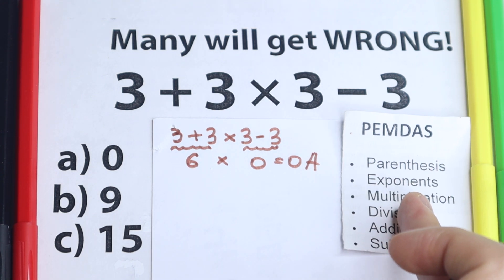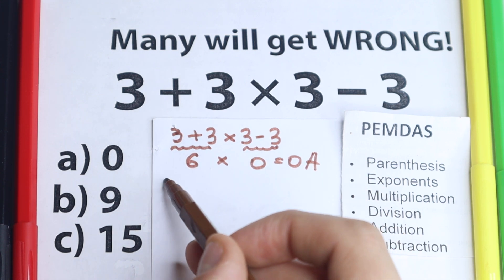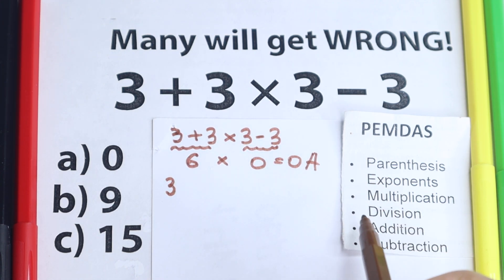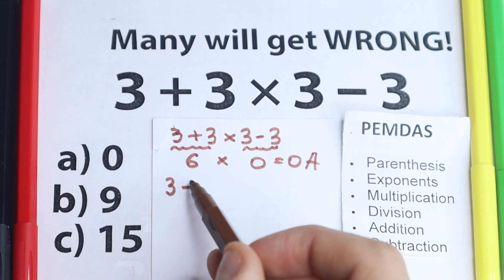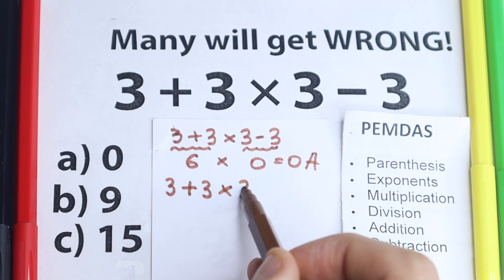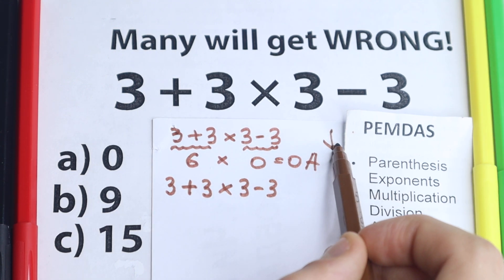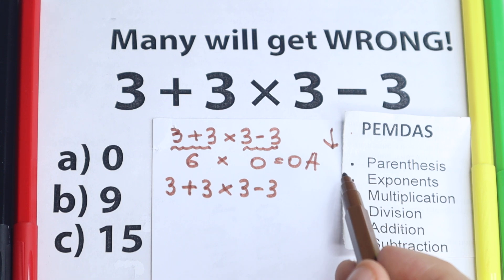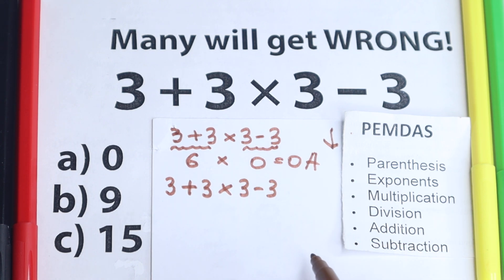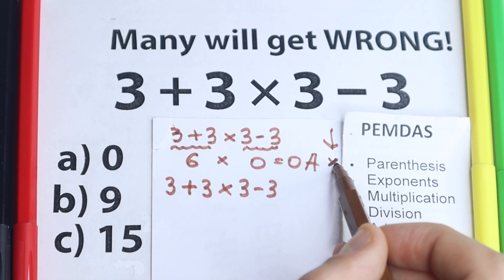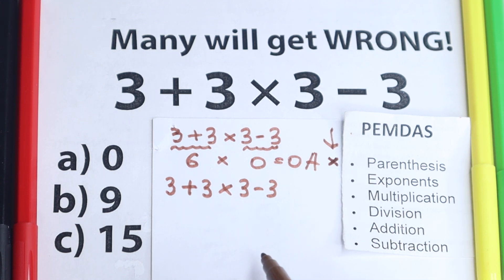Let's write this question once more. 3 plus 3 times 3 minus 3. If you look at PEMDAS, this works from the top to the bottom, so the first step is parentheses. Now we need to scan where do we have parentheses. I don't see any parentheses, so we can skip this step.